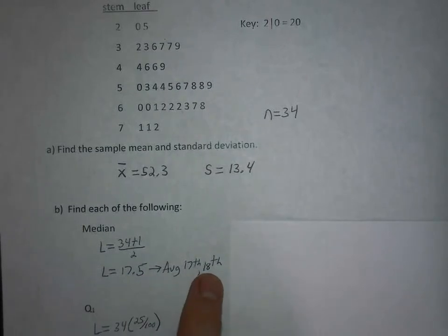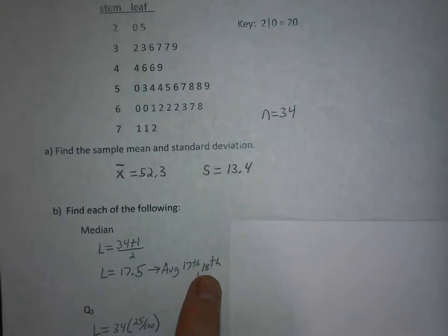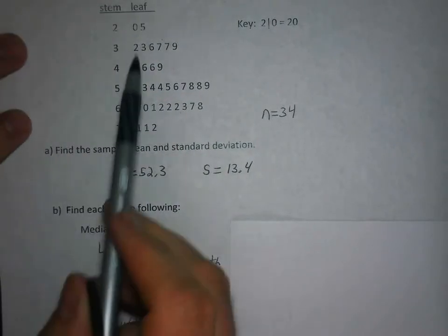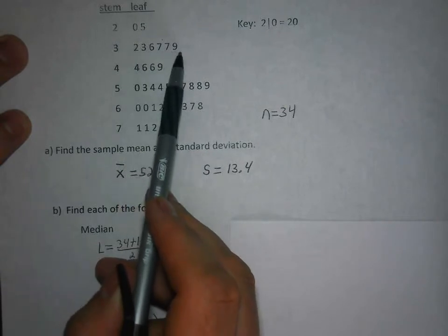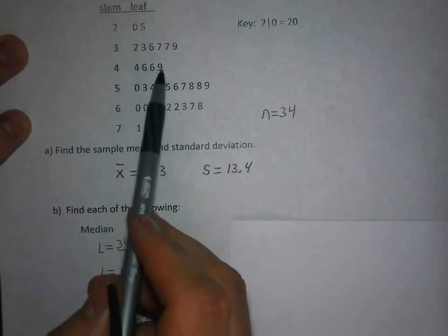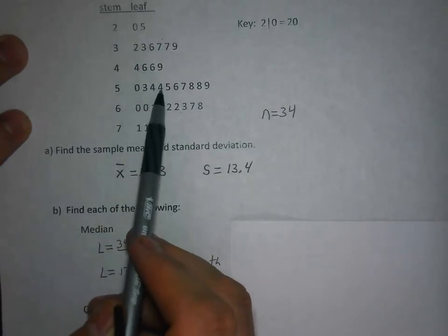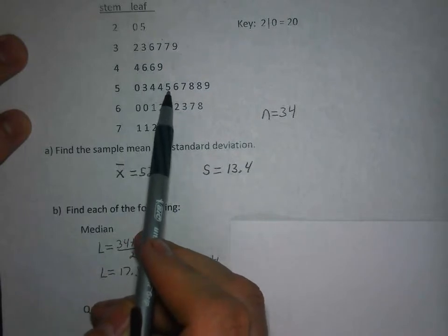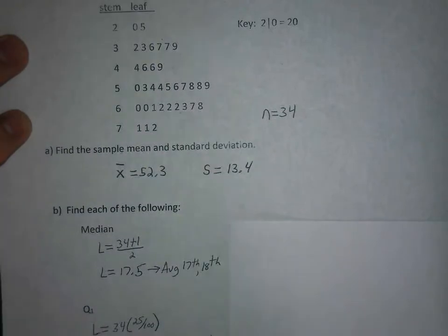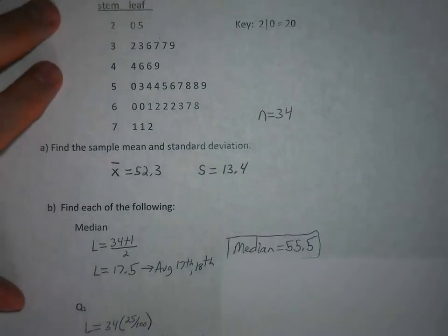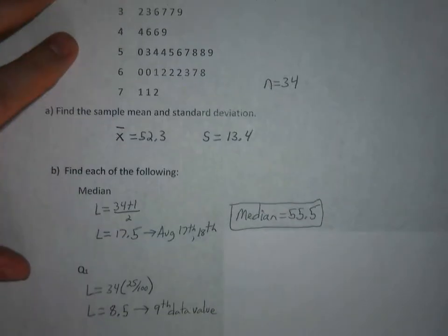If you count into the data set 17 places - there's two here, three, four, five, six, seven, eight, nine, ten, eleven, twelve, thirteen, fourteen, fifteen, sixteen - the seventeenth data value is 55 and the 18th is 56. So you average those together to get the median of 55.5.